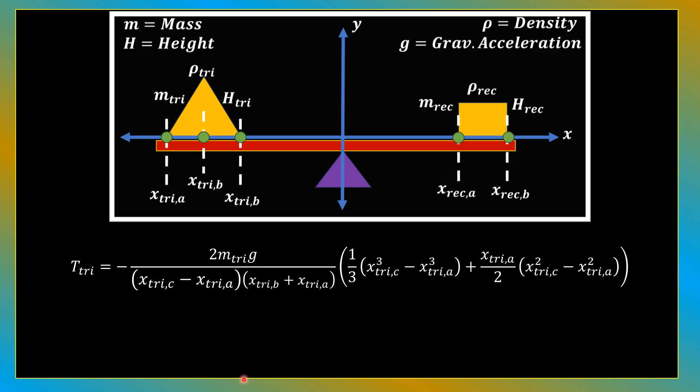And if we solve these two equations, then we can condense them into a single equation for torque contributed by the triangle. T_tri is a function of the mass of the triangle m_tri, gravitational acceleration g, and the three points on the triangle specified in the diagram: x_tri_a, x_tri_b, and x_tri_c.